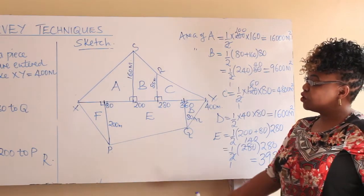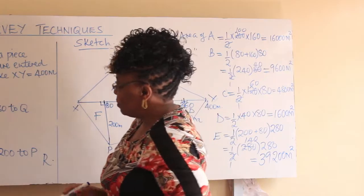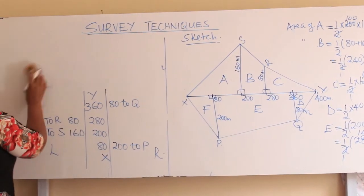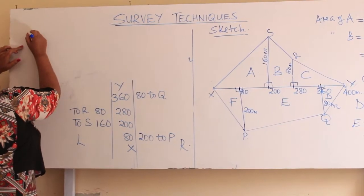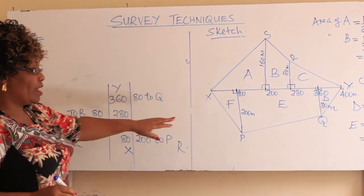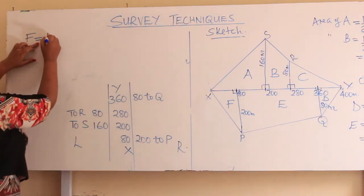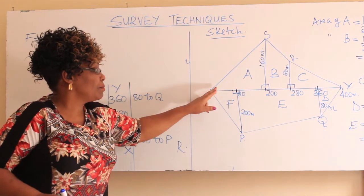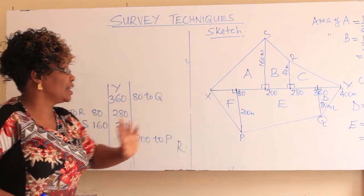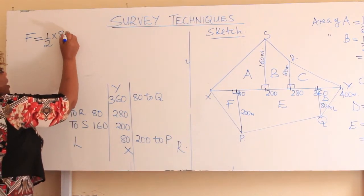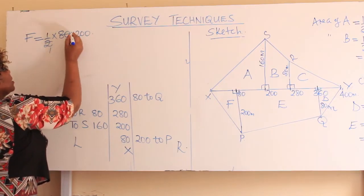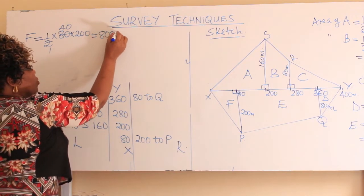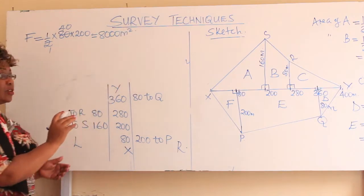Finally, we go to F. F is a triangle. We use a half times base times height. The base is 80 minus 0, so 80. And our height is 200. So 80 times 200 divided by 2 — the area for this triangle is 8,000 meters squared.